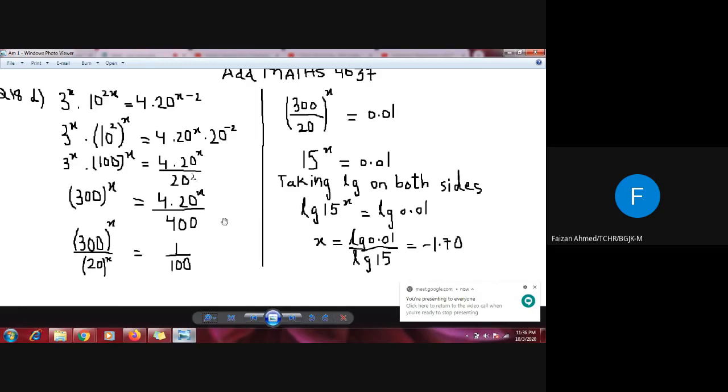Question number 18 part D, exercise 3.4. The question is to find the value of x. The equation is 3 to the power x times 10 to the power 2x equals 4 multiply by 20 to the power x minus 2.